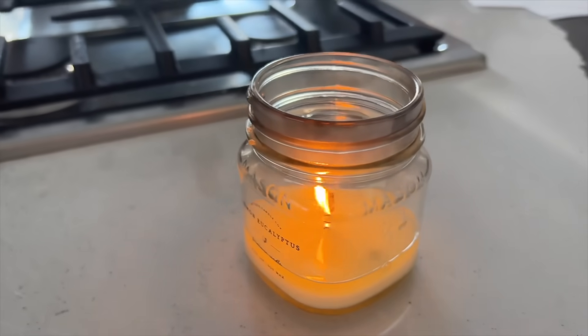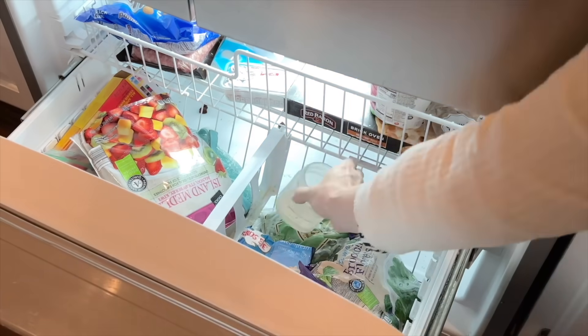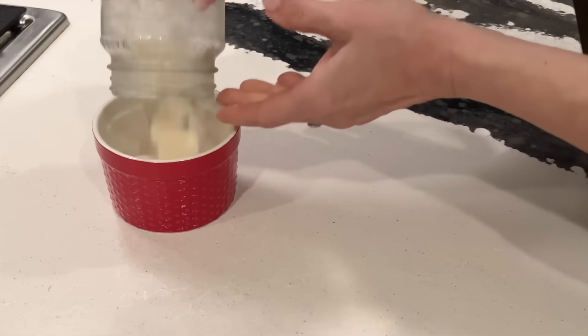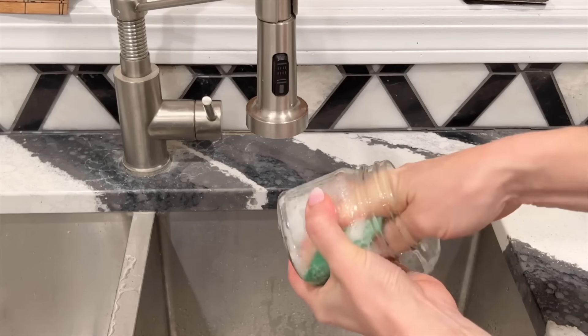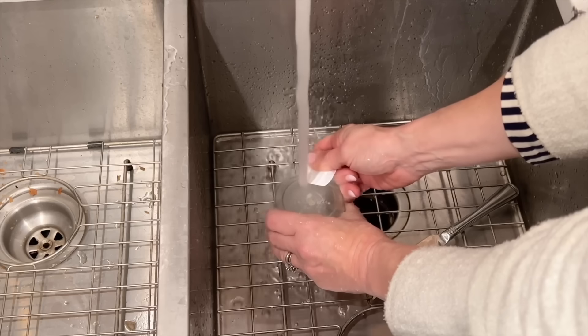Once your jar candle is almost used up, let the candle cool and then pop it into the freezer for at least two hours. Wedge the edge of the knife into the side of the remaining wax. Now soak the jar with some hot sudsy water and then wipe the inside of the jar with a cloth or sponge.